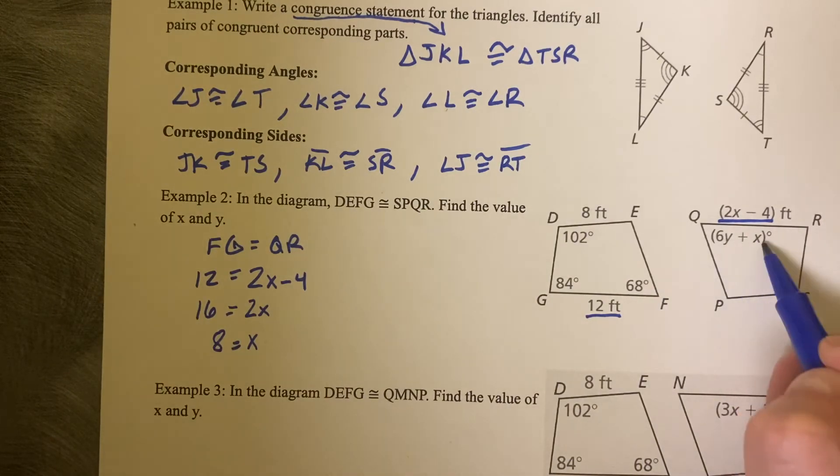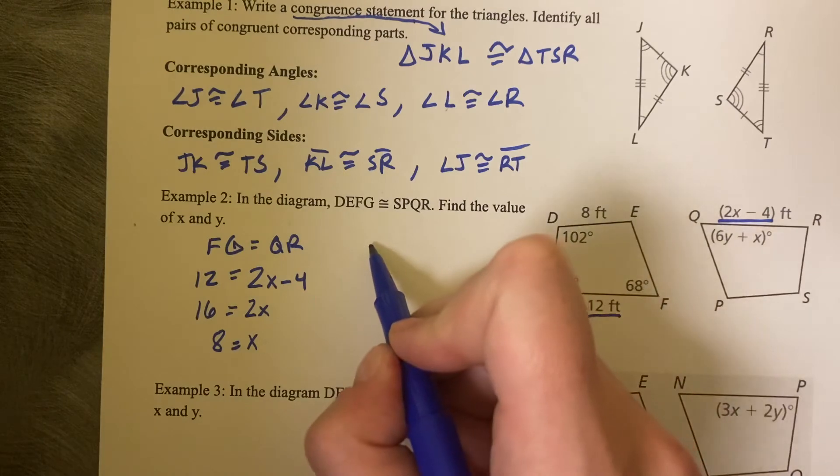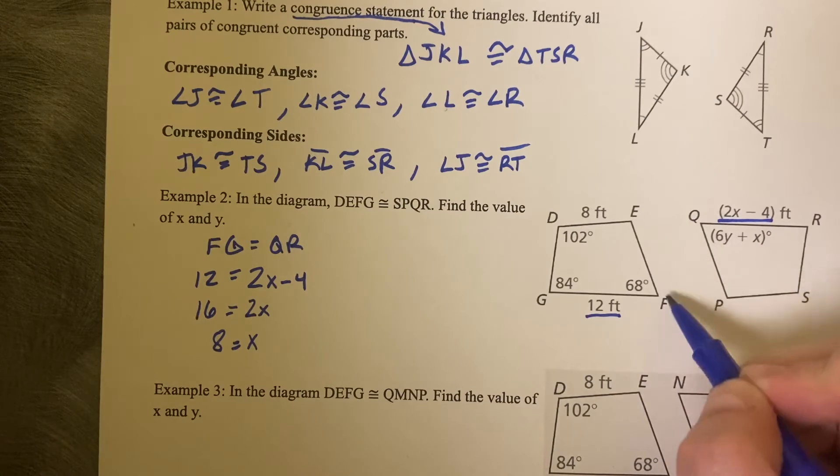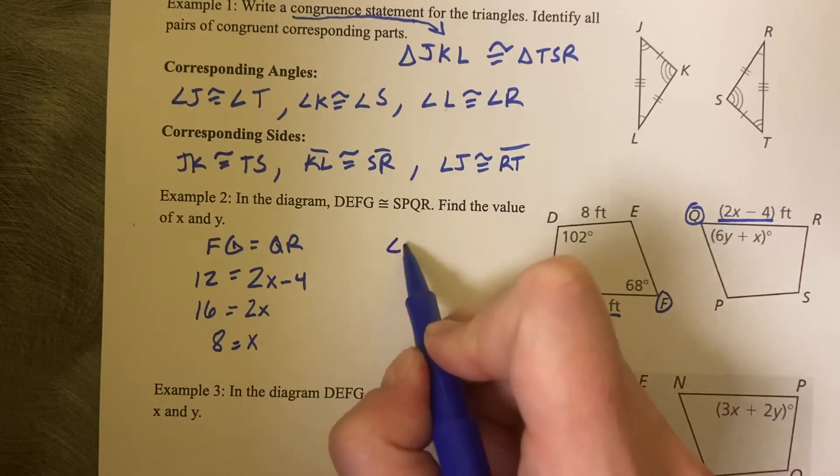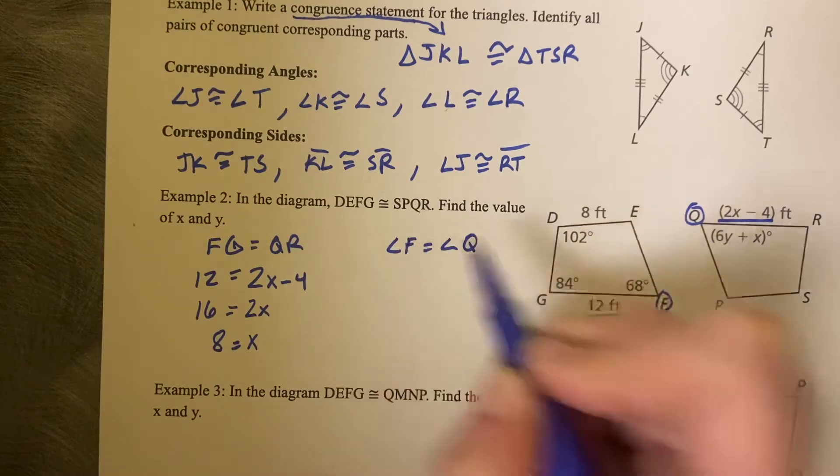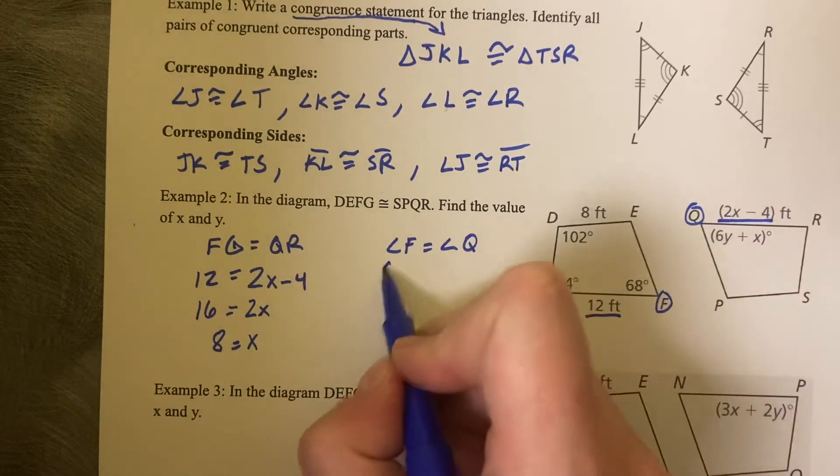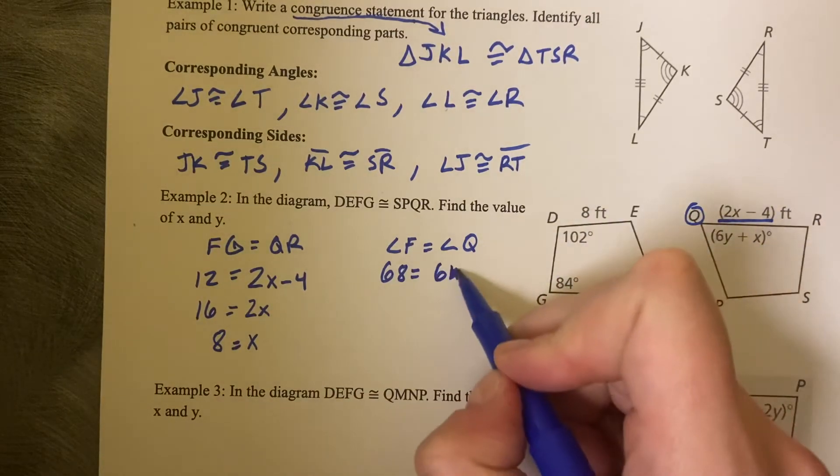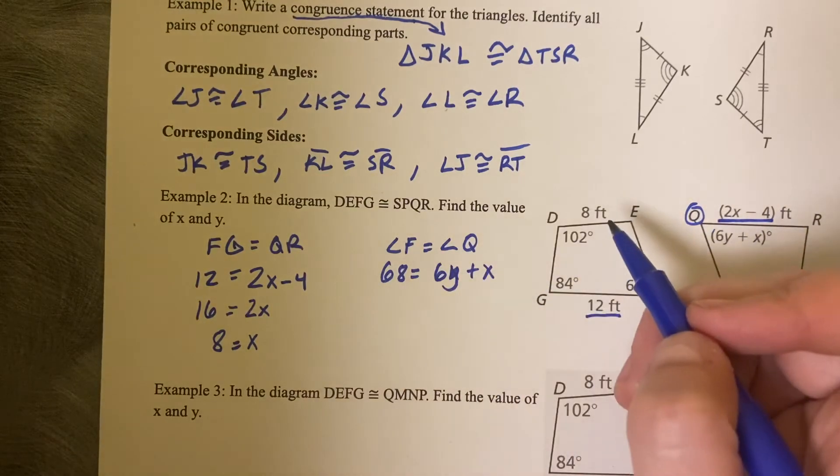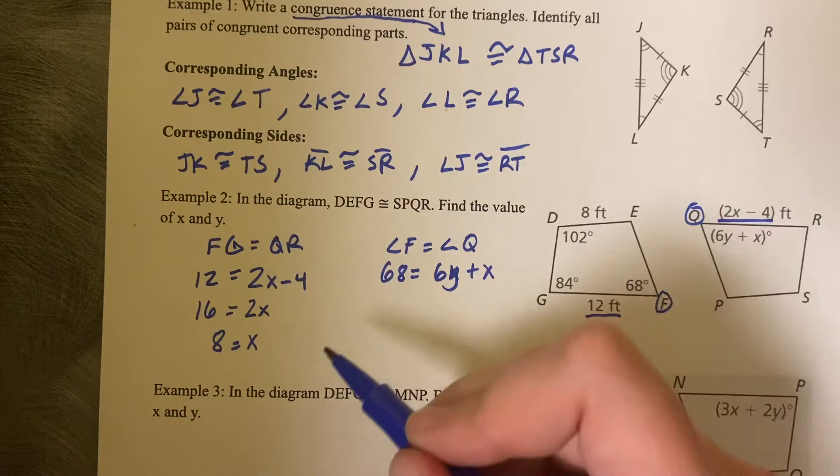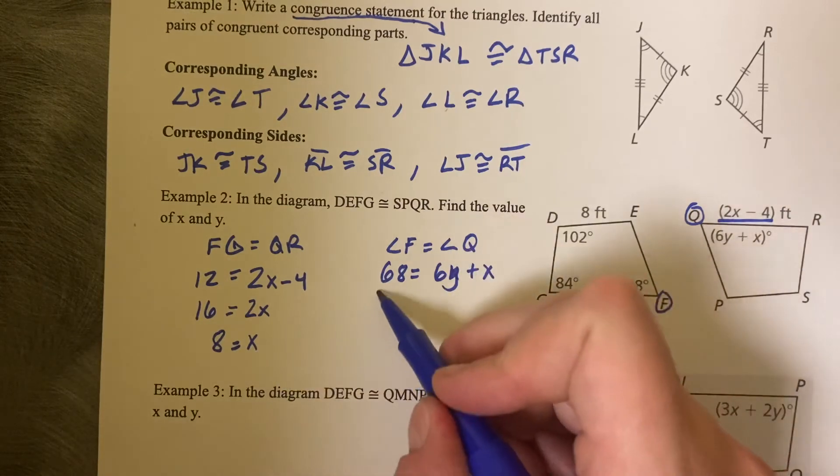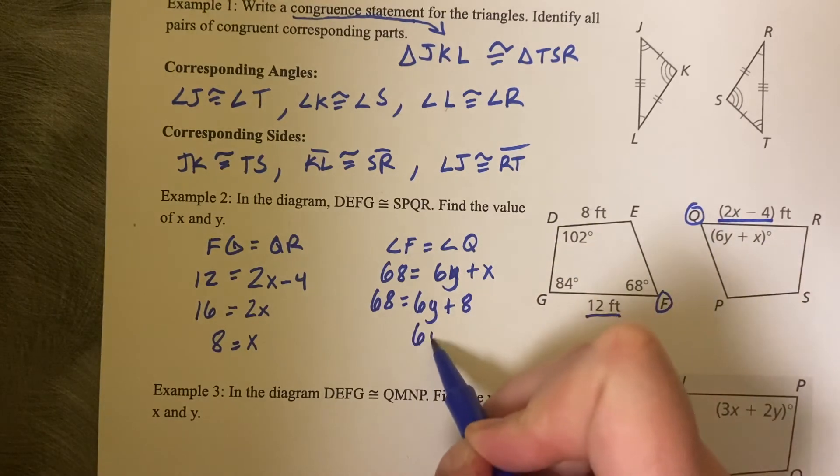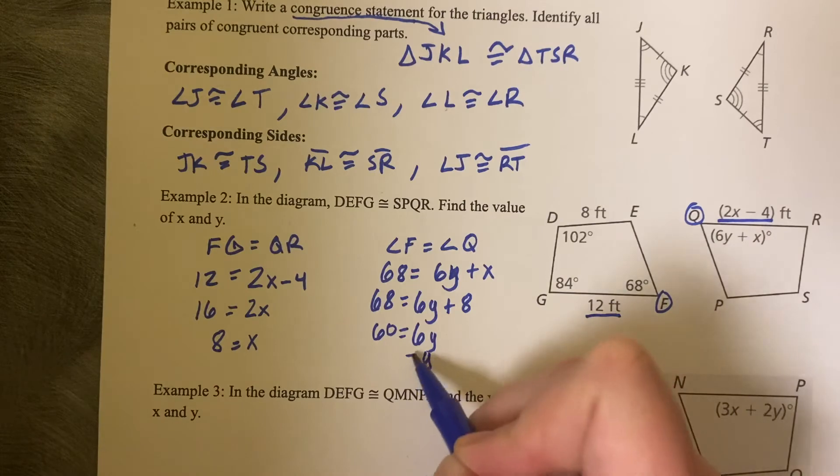Now here's the second expression, Y and X. So angle Q matches or corresponds to angle F. Those match each other. So we can say angle F equals angle Q. So 68 equals 6X plus, or I'm sorry, 6Y plus X. But now we know what the value of X is. I calculated it over here. So 68 equals 6Y plus 8, subtract 8, and we get 6Y equals 60, and Y equals 10.